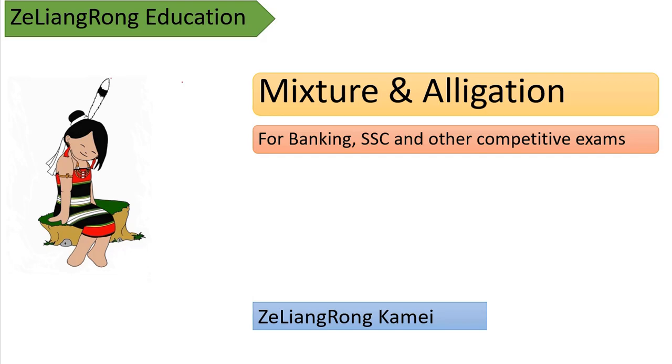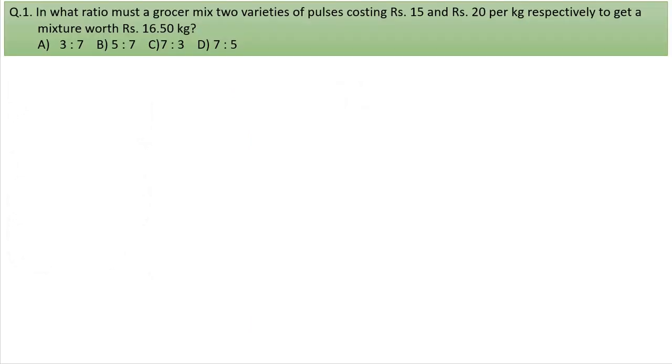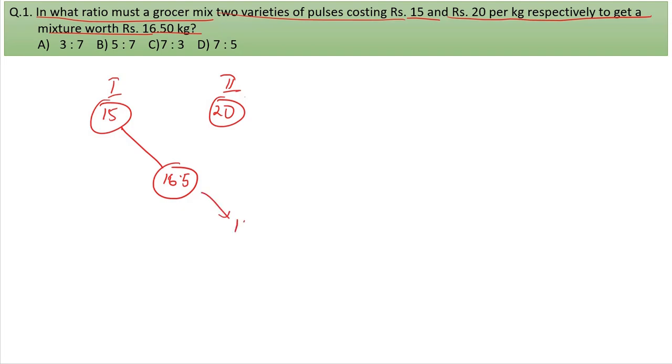Question 1: In what ratio must a producer mix two varieties whose costs are Rs. 15 and Rs. 20 per kg respectively to get a mixture worth Rs. 16.50 per kg? We have Rs. 15 and Rs. 20, and the target is Rs. 16.50.